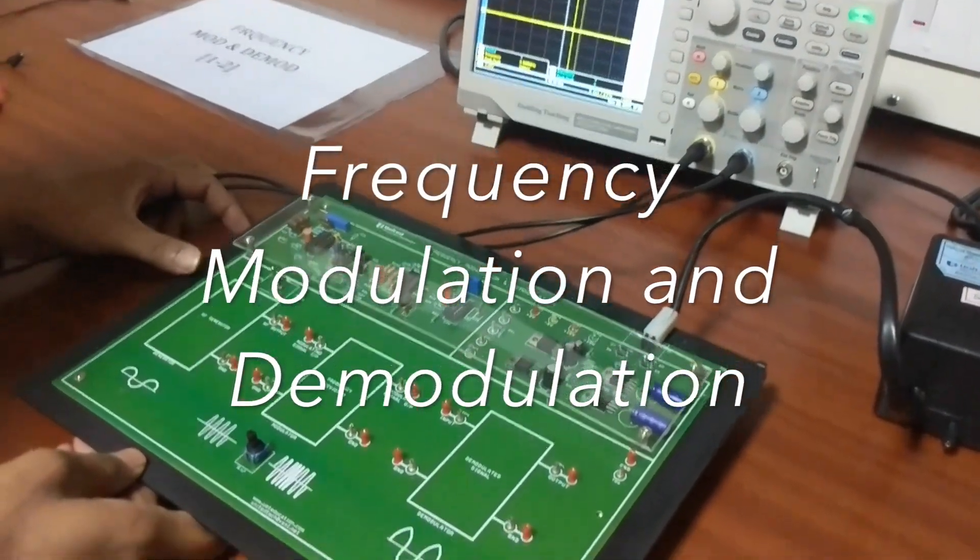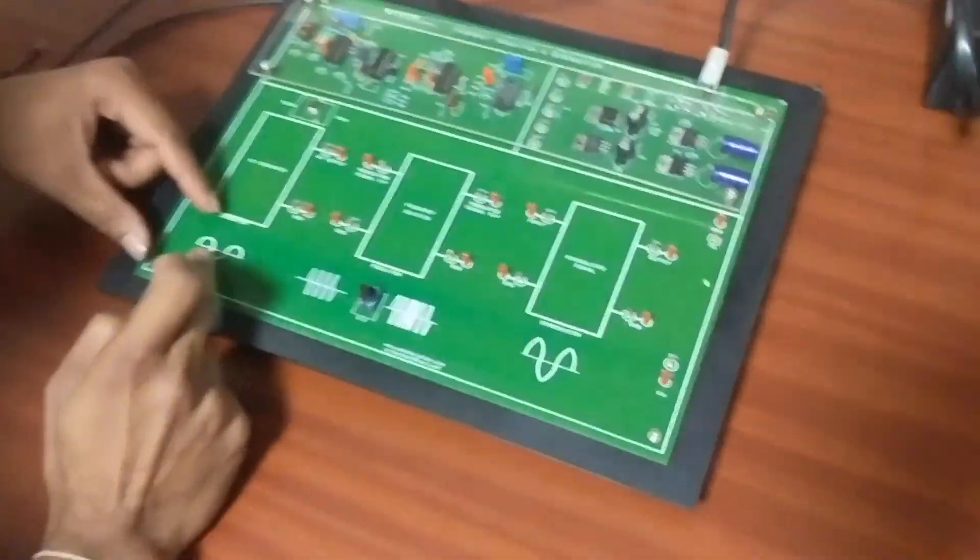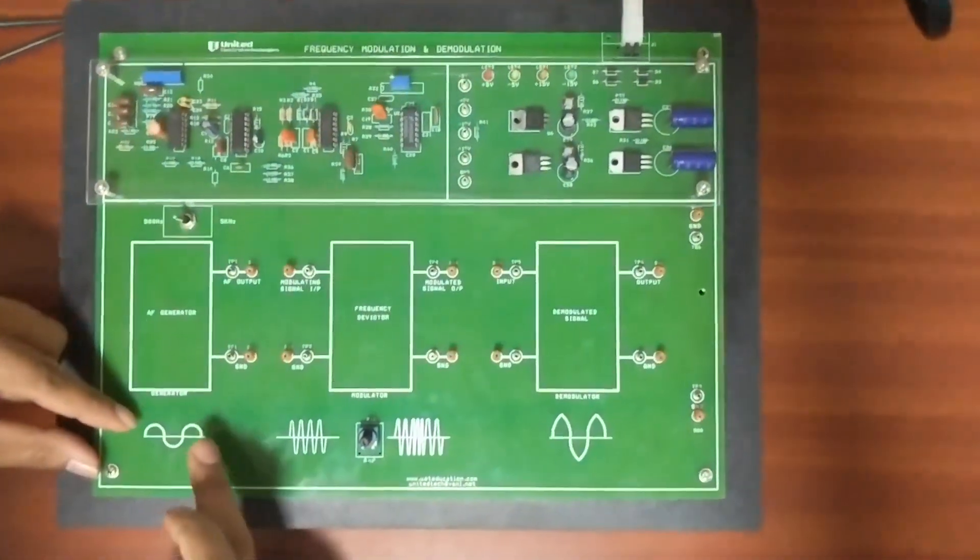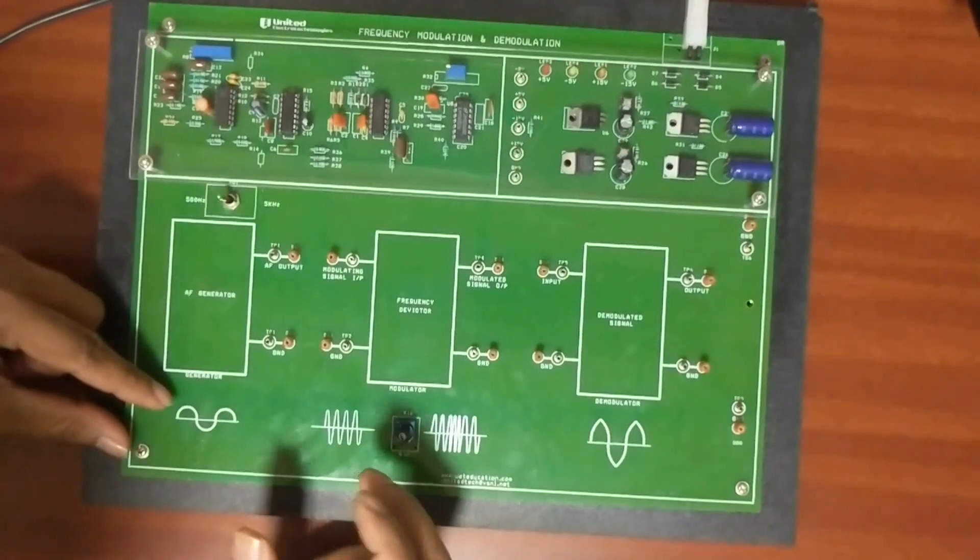The second experiment is frequency modulation and demodulation. In amplitude modulation, the amplitude of the signal varied with respect to the carrier frequency of the signal.